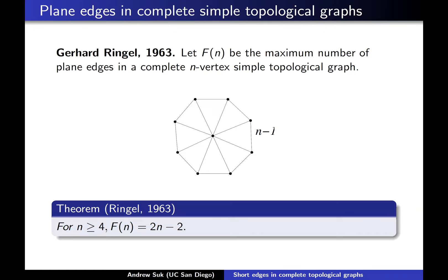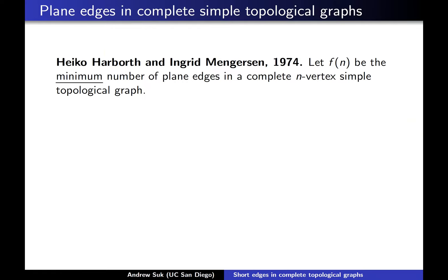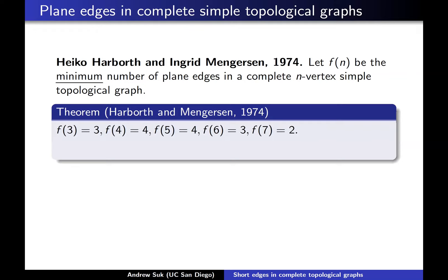Motivated by this 1963 paper, Harborth and Mengersen basically studied the question I asked earlier. They defined little f(n) to be the minimum number of plane edges in an n-vertex simple topological graph. What they proved in the 70s were exact values for little f(n). In particular, they showed that no matter how you draw K_7 in the plane in a simple way, there's always going to be two plane edges. For n ≥ 8, little f(n) = 0, so you're not always guaranteed to have plane edges in complete simple topological graphs.